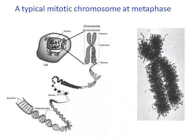First of all, let us have a look at what is a chromosome. Our body is made up of billions of cells. Each cell has a nucleus, and inside the nucleus is the genetic material DNA. If we stretch out the DNA in a single cell, it would be approximately 3 meters — as long as a car. DNA is packaged into thread-like structures which are called chromosomes.